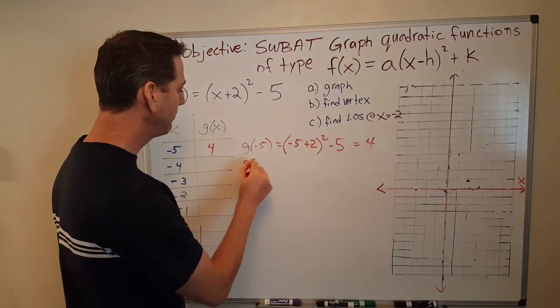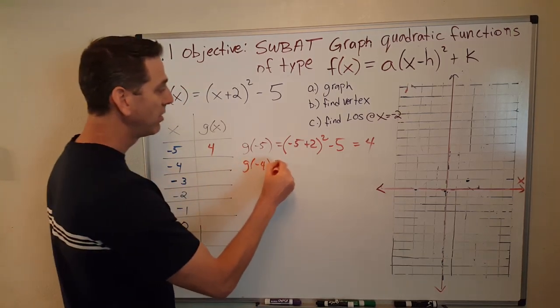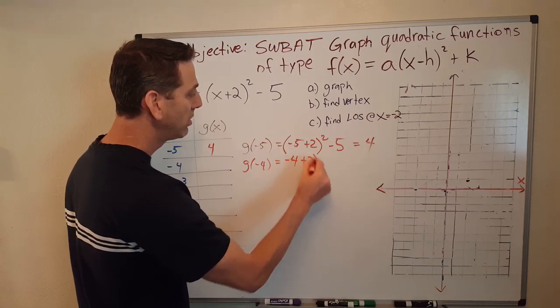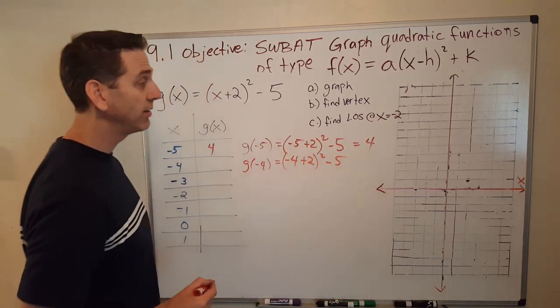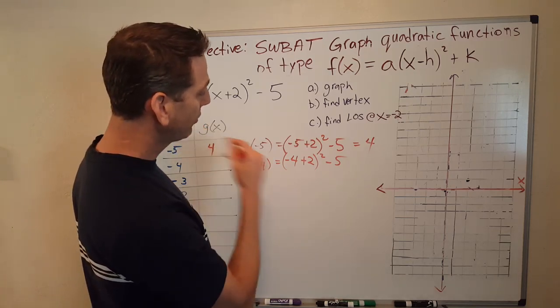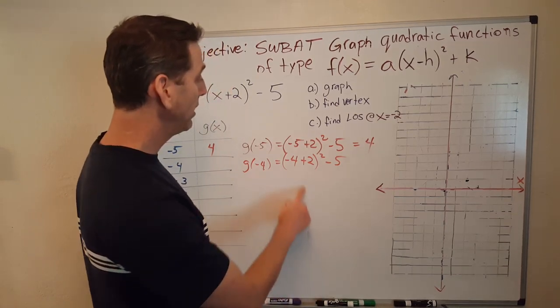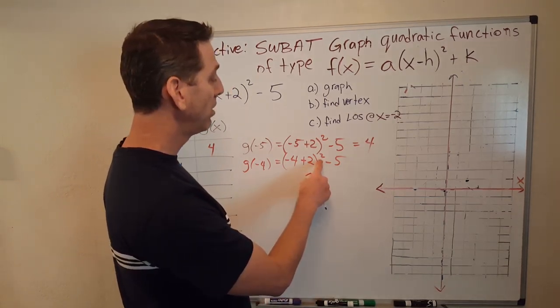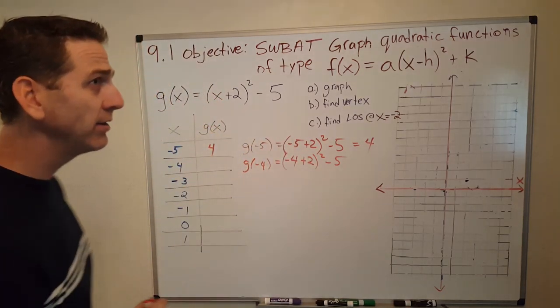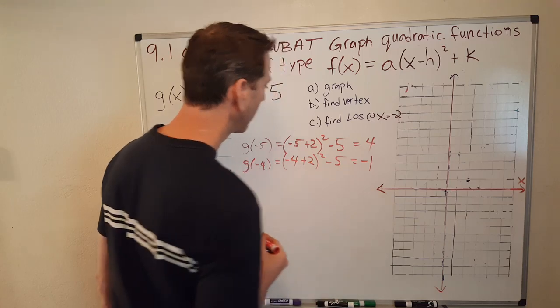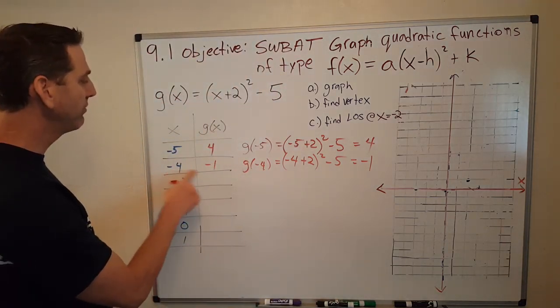Okay, how about g of negative 4? Alright, that's what we're dealing with now. Well, now I just substitute a negative 4. And I have that minus 5 at the end. Okay, so negative 4 plus 2 is negative 2. And negative 2 squared is 4. 4 minus 5. 4 minus 5 is negative 1. Hmm, interesting. So, g of negative 4 is negative 1.